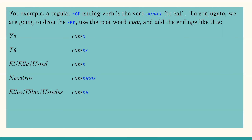Here we have an example of how to conjugate the verb comer. Comer is an ER ending verb. We're going to drop this ending and we are going to end with these three letters — com — and we are going to add the endings in blue.